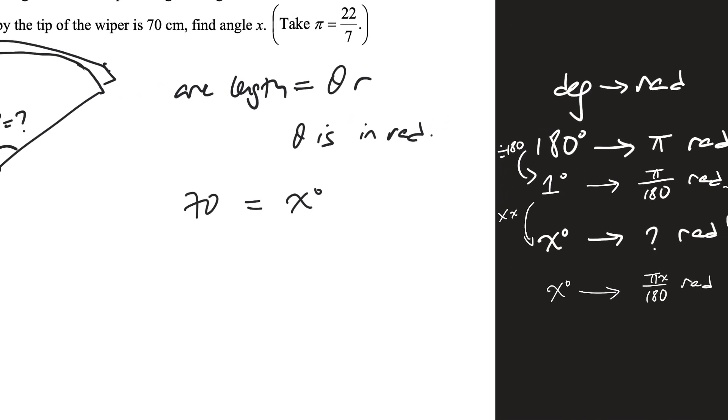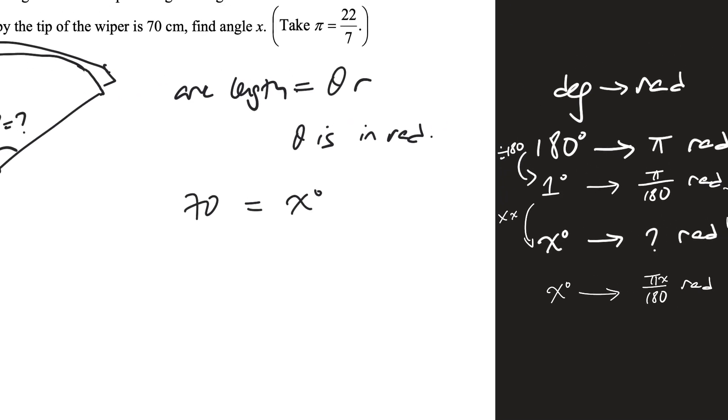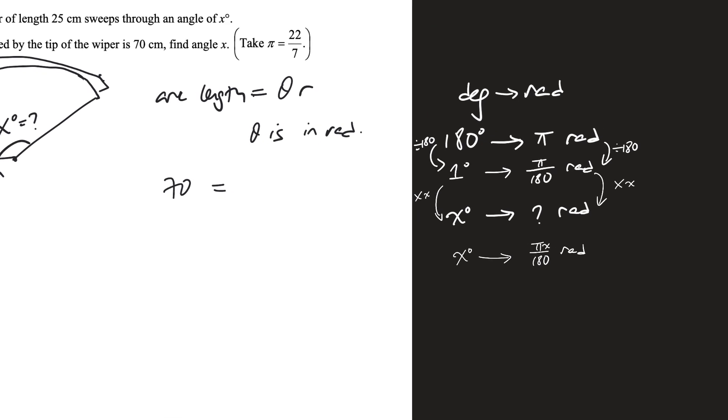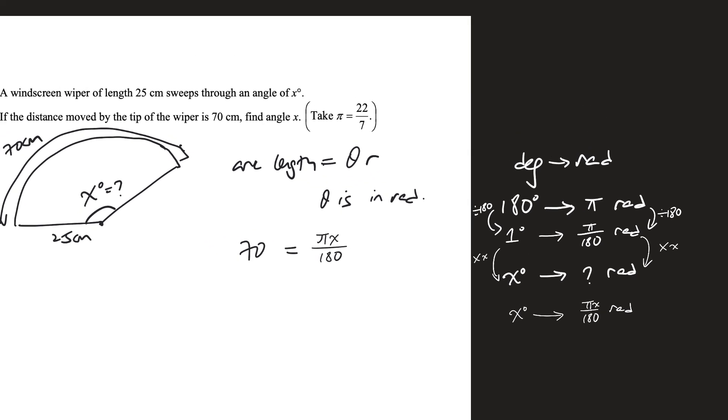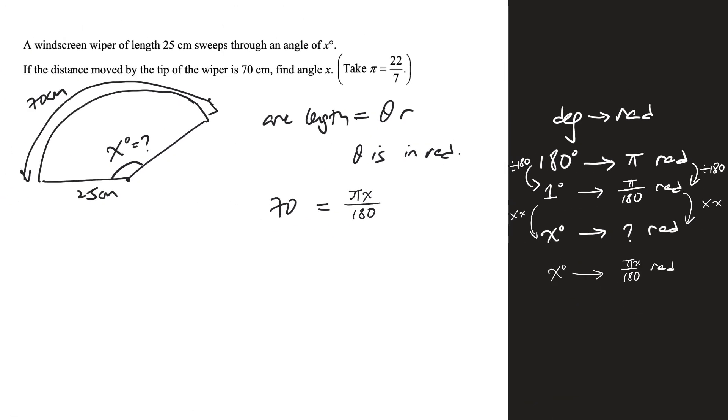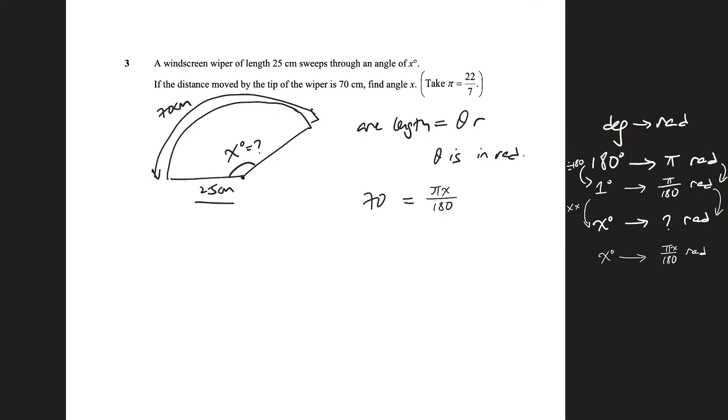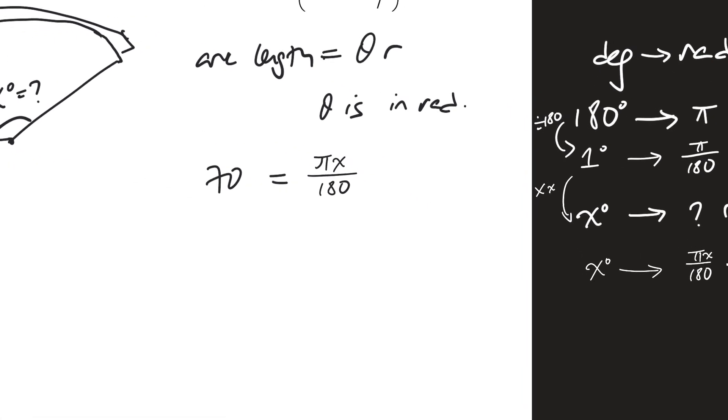And so over here, I cannot put it in x degrees, that is actually an error. So what I'm going to do, I'm going to say this is in radians, so it's pi x divided by 180. So this is pi times x over 180. And that is theta, and I multiply by r. What is r? r is 25 here. So this times 25. Let me just simplify a little bit. Multiply 25 into the numerator, so it's 25 pi x over 180.